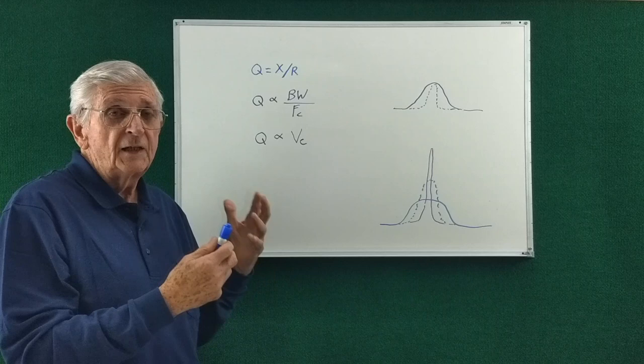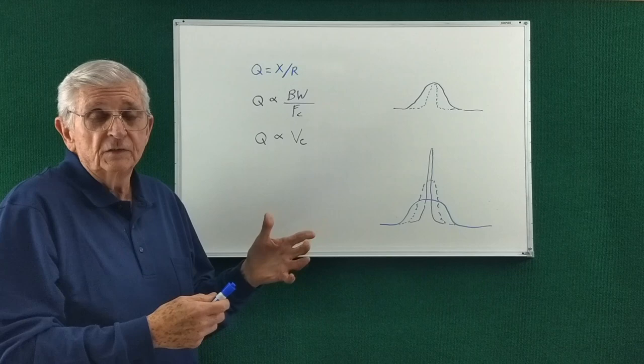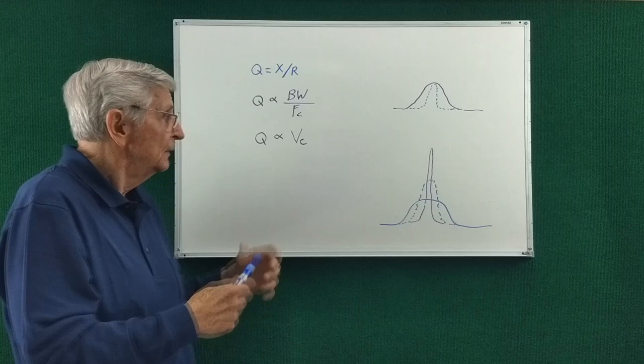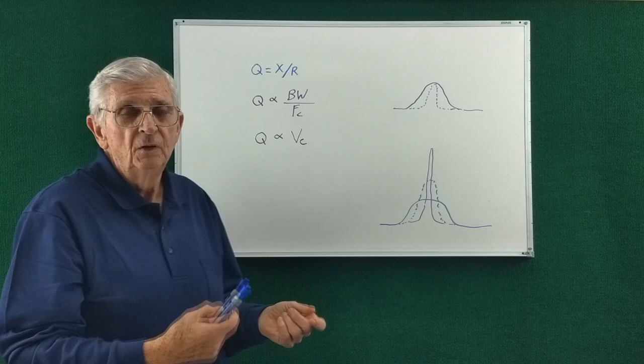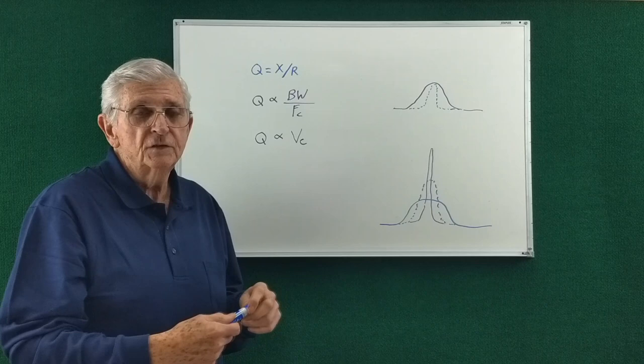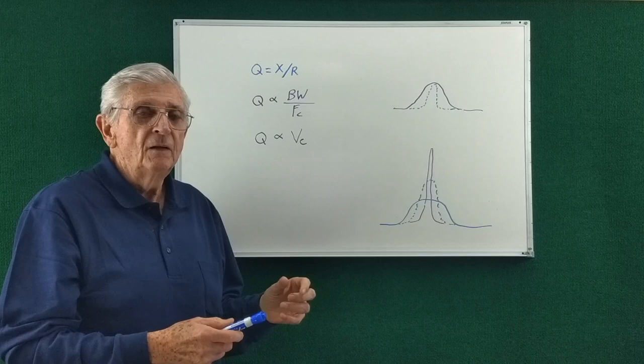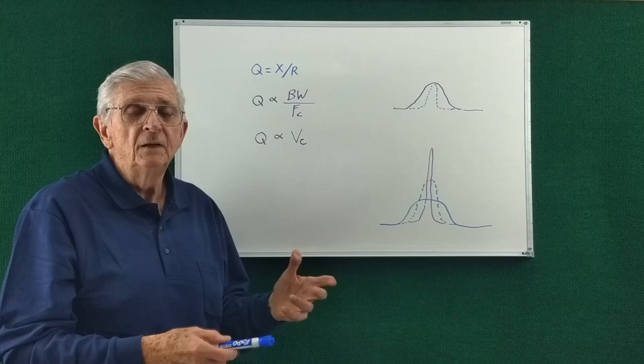And whatever it is, it lowers the Q, so the efficiency goes down even more. I believe it's probably a lossy capacitor. But whatever. So there's trade-offs between high Q and low Q. My goal is to have just the right Q so that we can do some interesting stuff.